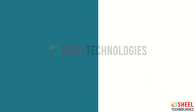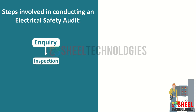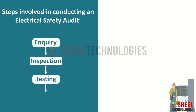The steps involved in conducting an electrical safety audit are: inquiry, inspection, testing, and verification.